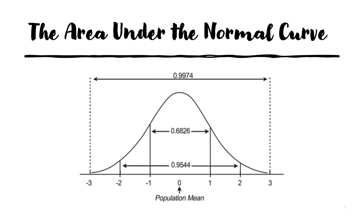The area under the normal curve is equal to 0.9974, which is approximately equal to 1. In reality, it is not exactly 1, but we assume the total area under the curve equals 1. As you can see in this graph, the total area under this curve is 0.9974.